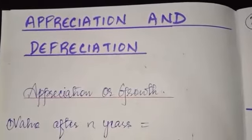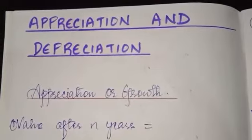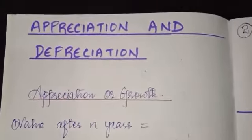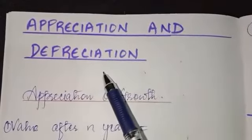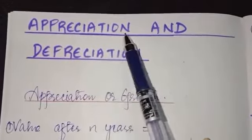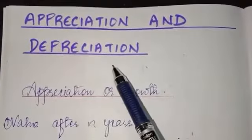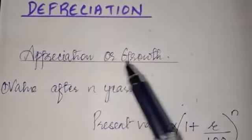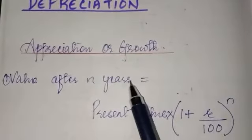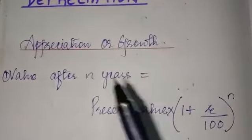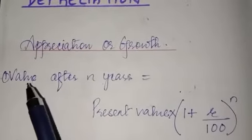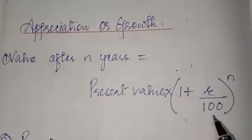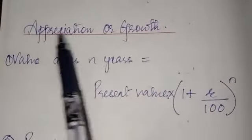Good morning class 9. From today we will start the next part of compound interest — the second part. So appreciation and depreciation: appreciation means increase or growth, depreciation means decrease. Here we have the formula for appreciation or growth. Value after n years is similar to the compound interest amount formula: value after n years is equal to present value into 1 plus r by 100 to the power n, when it is appreciation.